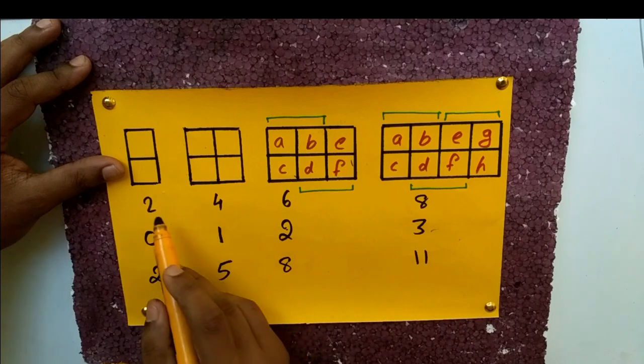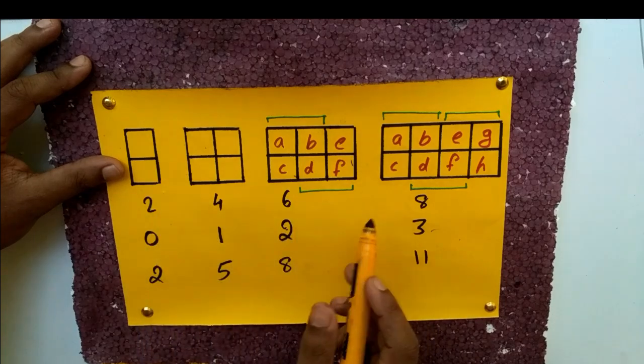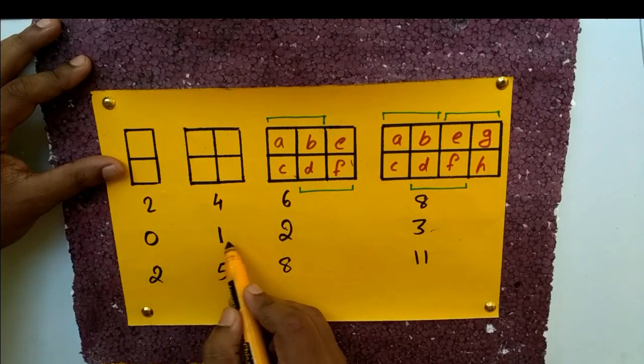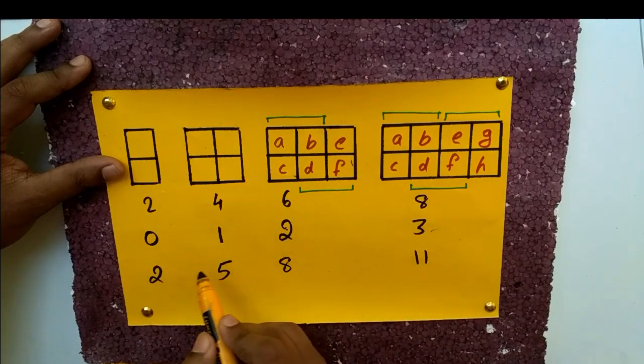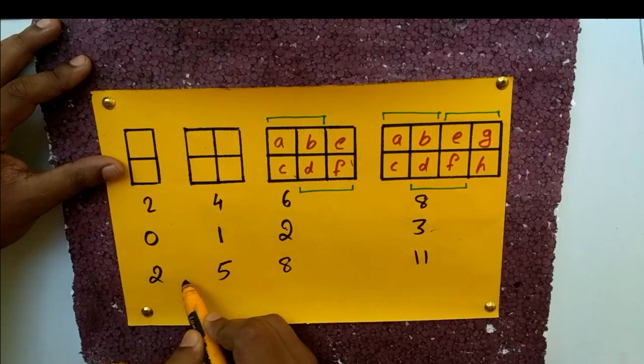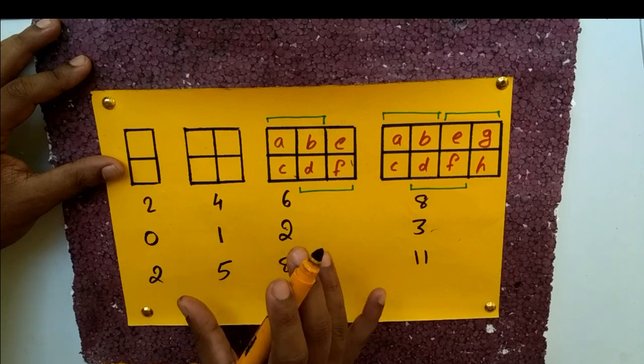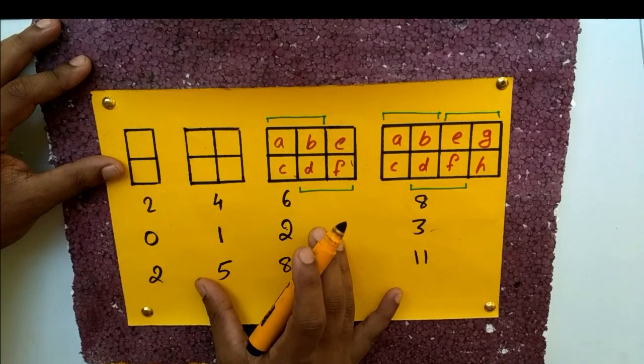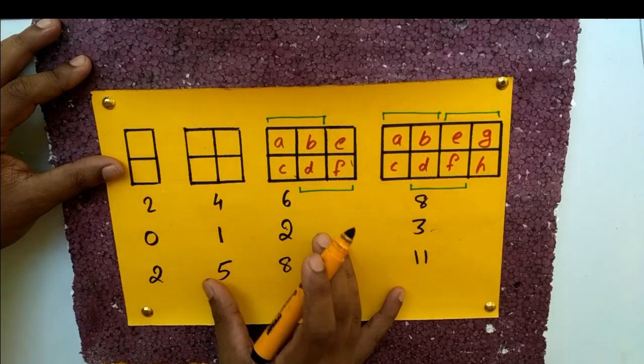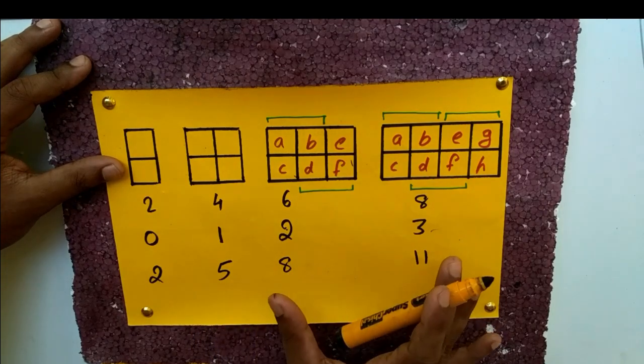Let's take a look at 2, 5, 8 — the sequence is 2, 5, 8. The third thing we have to do.